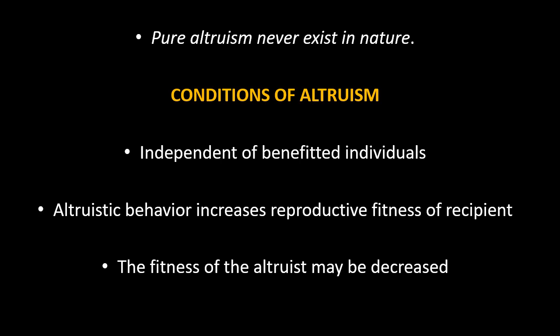Now let us see the conditions of Altruism. The first condition: Altruism does not depend upon the benefited individual — the Altruist controls the phenomenon and can serve any member of the population or another population. The second condition: the reproductive fitness of the recipient should be increased by the Altruist behavior so the recipient can produce more offspring through which the Altruist gene can spread. The third condition: the fitness of the Altruist may be decreased, specifically referring to reproductive fitness.